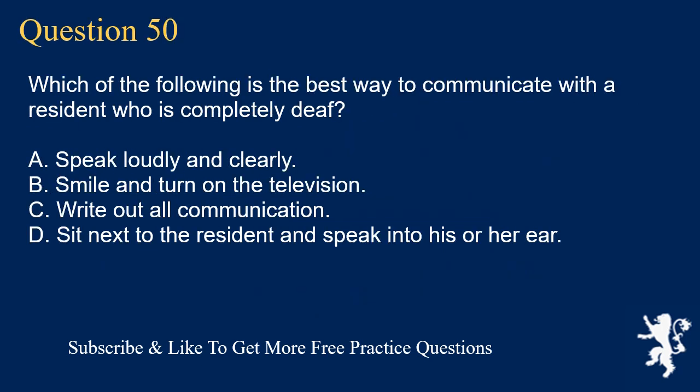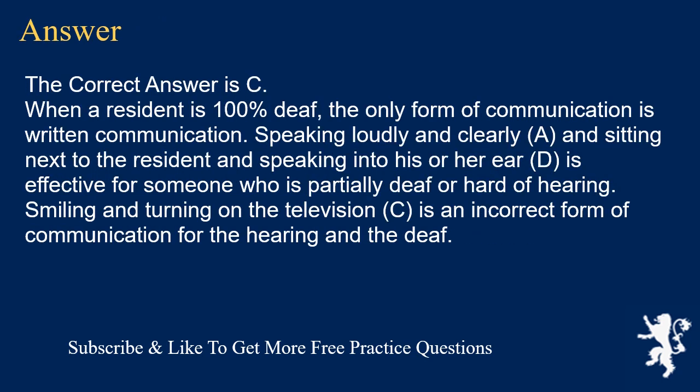Question 50. Which of the following is the best way to communicate with a resident who is completely deaf? A. Speak loudly and clearly. B. Smile and turn on the television. C. Write out all communication. D. Sit next to the resident and speak into his or her ear. The correct answer is C. When a resident is 100% deaf, the only form of communication is written communication. Speaking loudly and clearly or sitting next to the resident and speaking into the ear is effective for someone who is partially deaf or hard of hearing. Smiling and turning on the television is an incorrect form of communication.